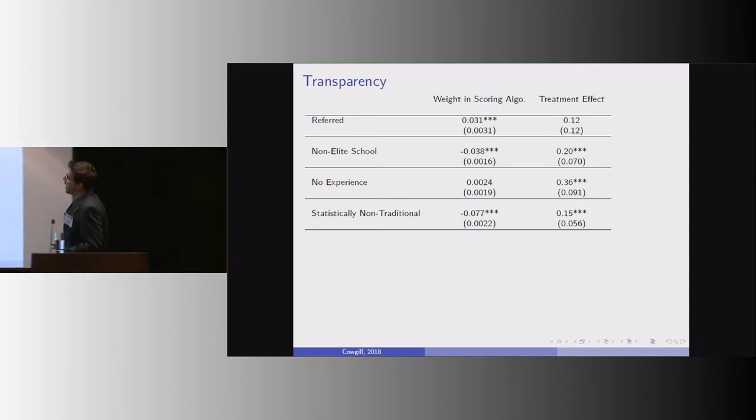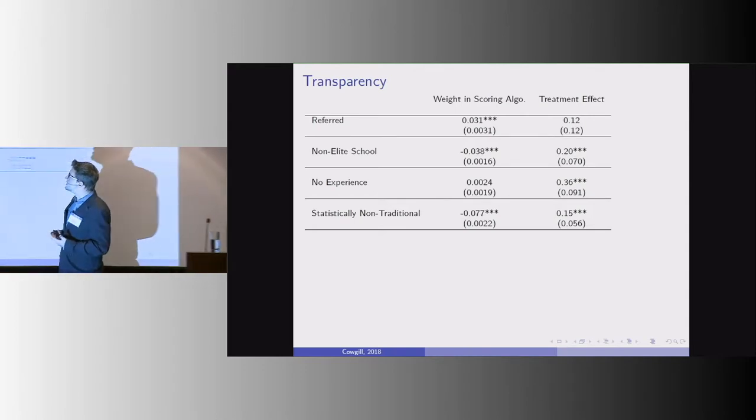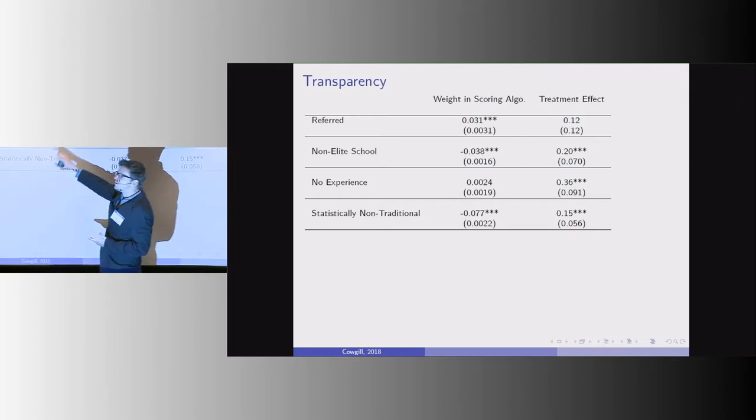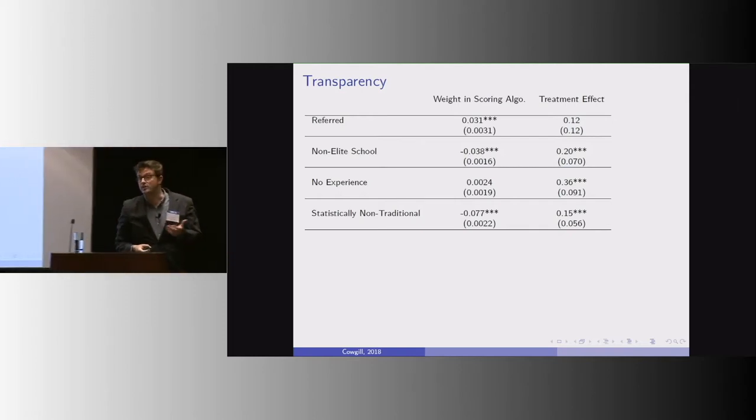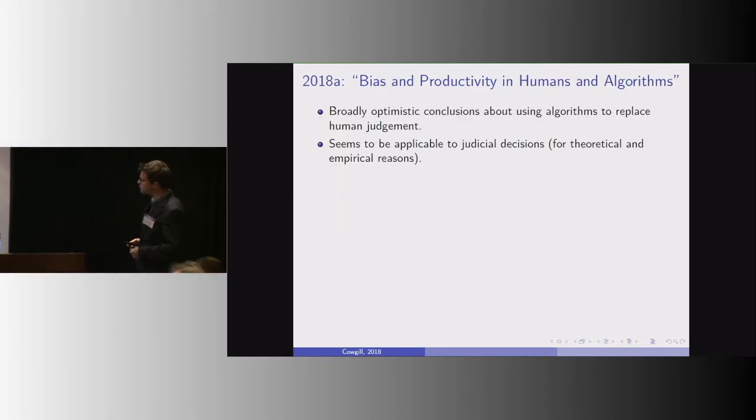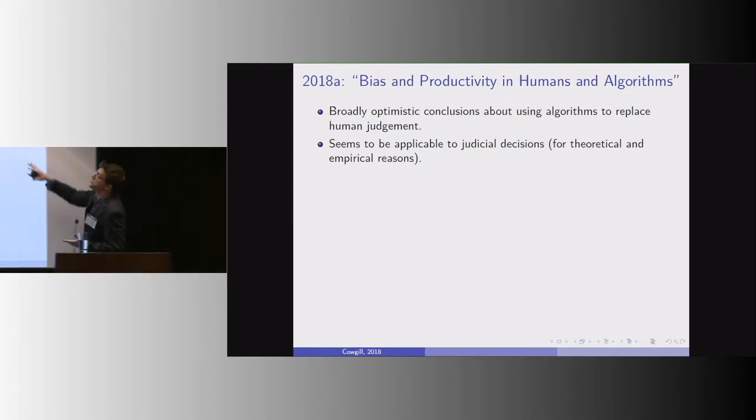So this kind of casts doubt on whether the idea of regulation of bias through policing the internals of algorithms would actually be very effective. So this, summarizing this paper, it has broadly optimistic conclusions that seem to be applicable to judicial decisions.